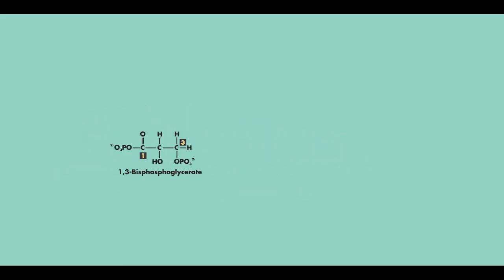This molecule then goes on to the next step of glycolysis and is catalyzed by phosphoglycerate kinase. And that's right, you guessed it, this step involves the movement of a phosphate molecule. But instead of moving a phosphate onto our substrate, we actually take a phosphate from the first carbon of 1,3-bisphosphoglycerate in order to make ATP.